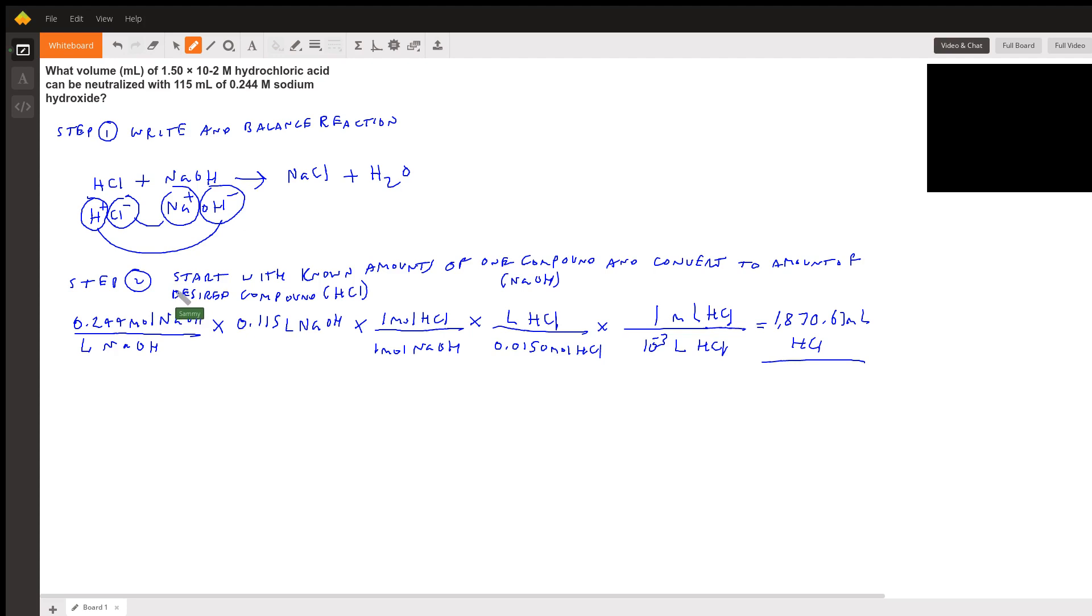Step two is we need to start with the known amounts of one compound. If we look here, we see that we have the volume and the molarity of the sodium hydroxide. So we're going to start with NaOH and convert to the amount of the desired compound, which is the volume of hydrochloric acid HCl.